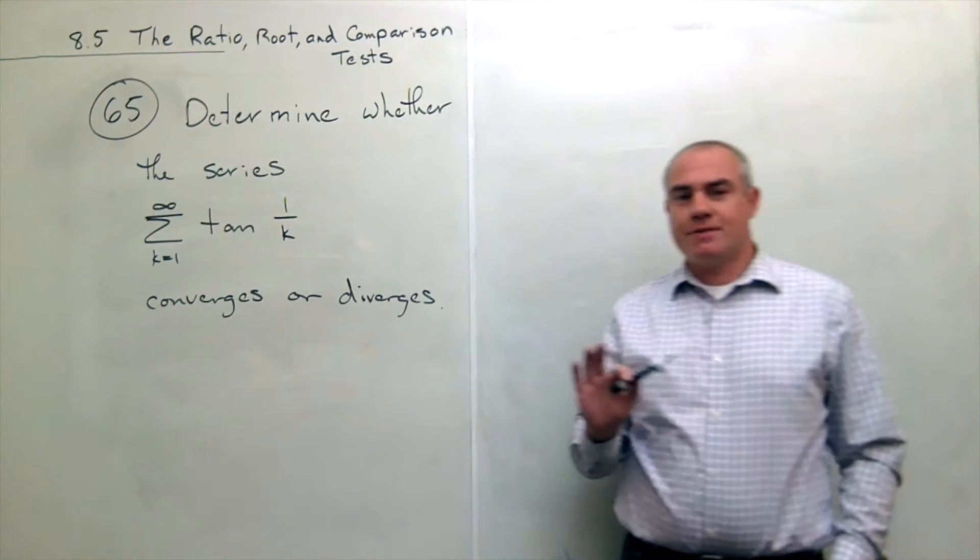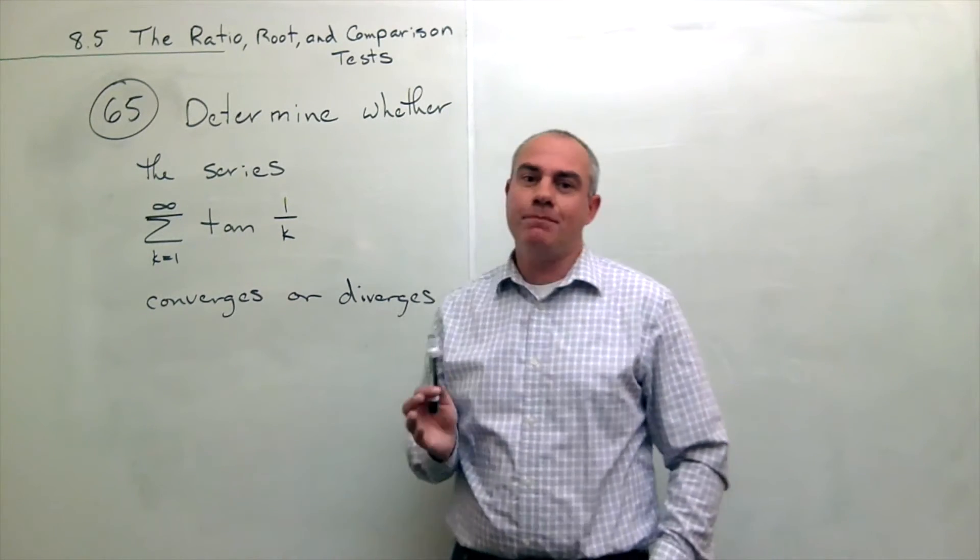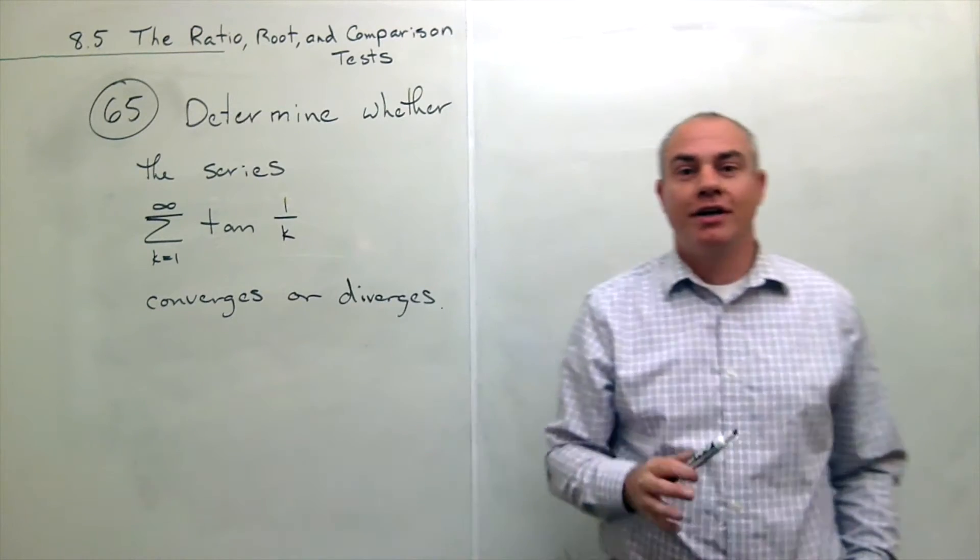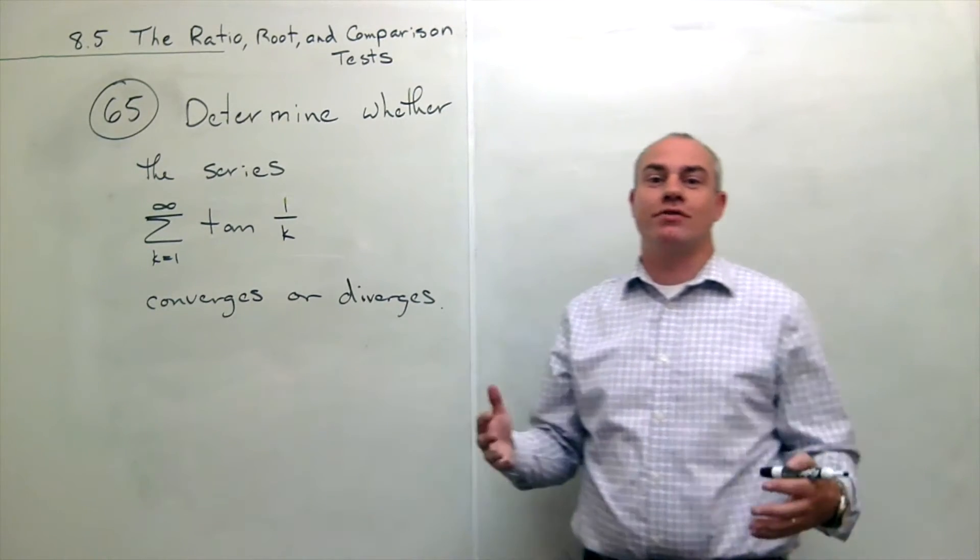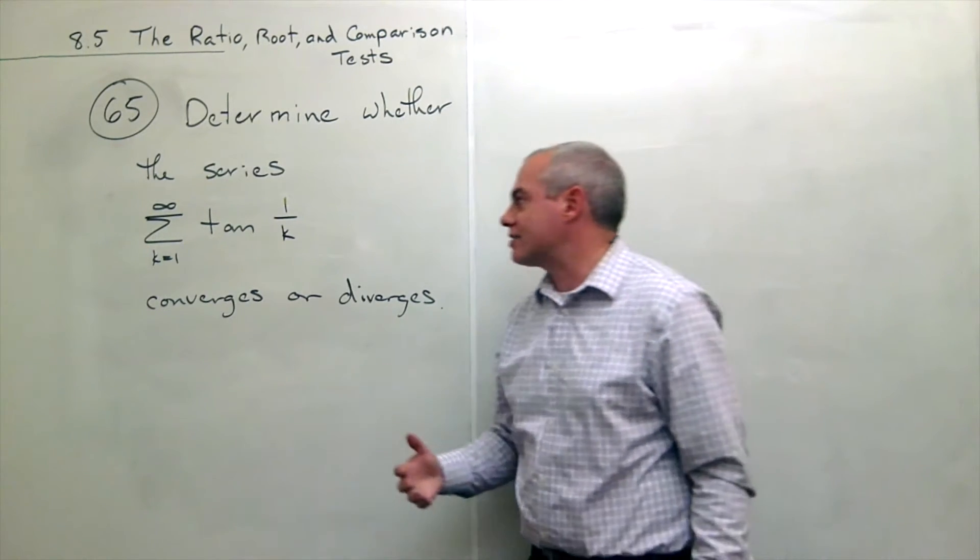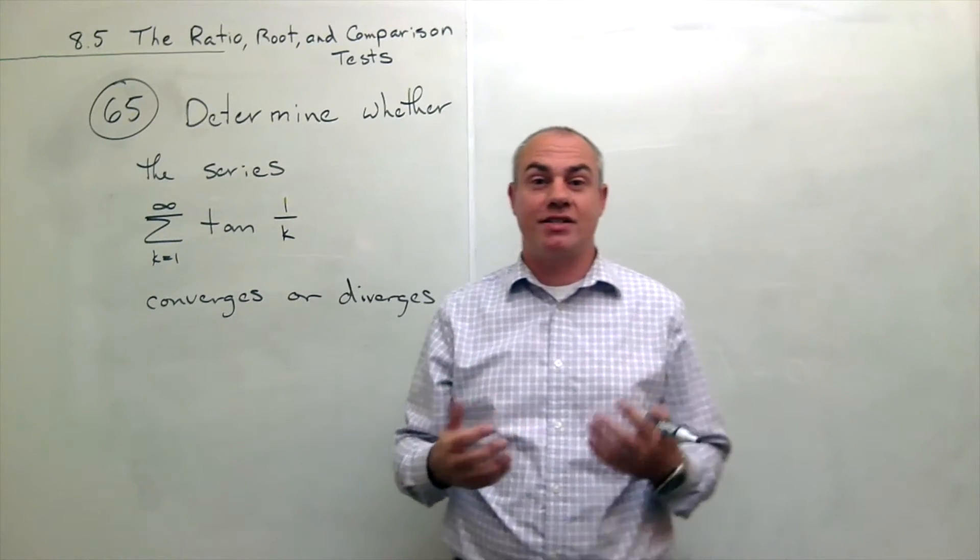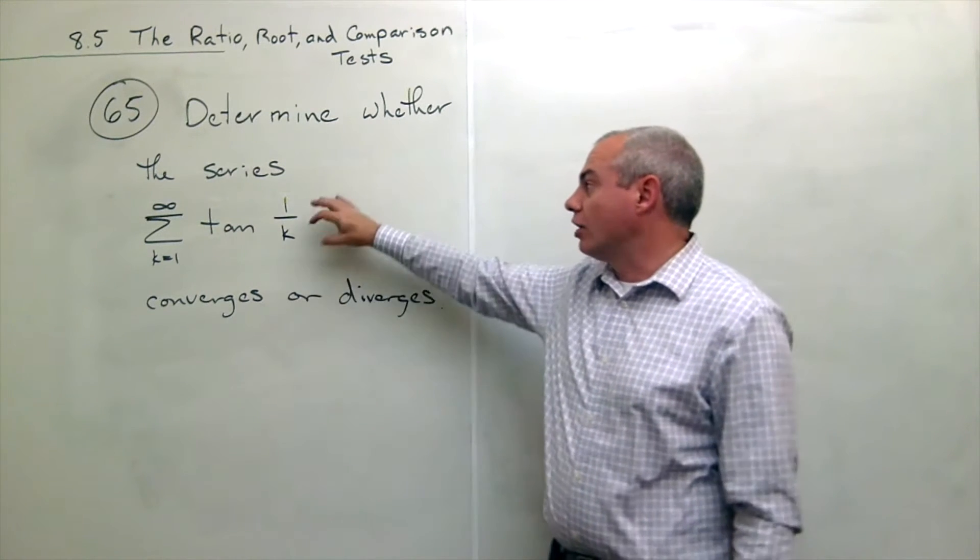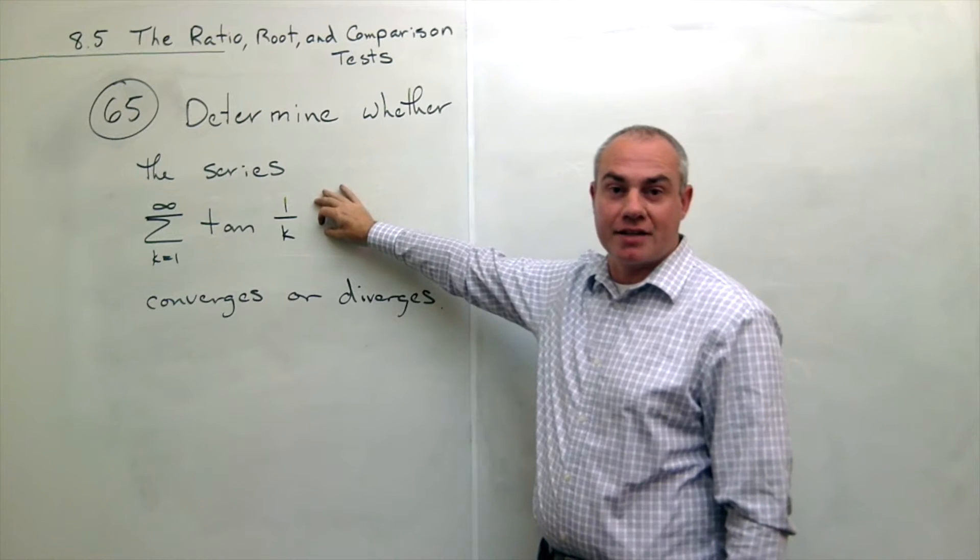This problem can be a little bit tricky because we're tempted to throw at it all of these tools that we've learned that are very convenient for us. The root test, the ratio test, the limit comparison test, they're all very helpful and they make life easy for us to determine whether series converge or diverge, but a lot of them are going to give us problems when we get to something like this.